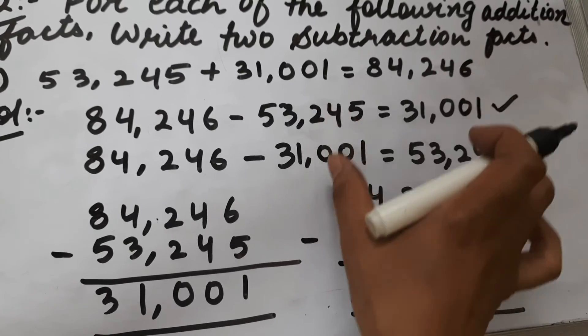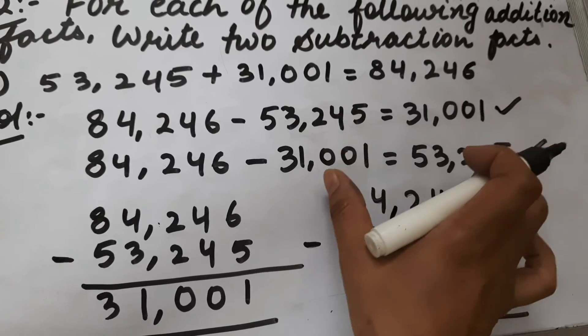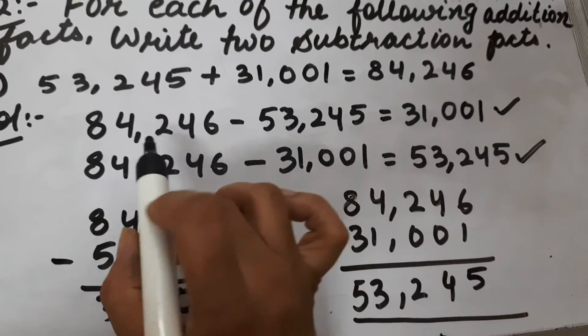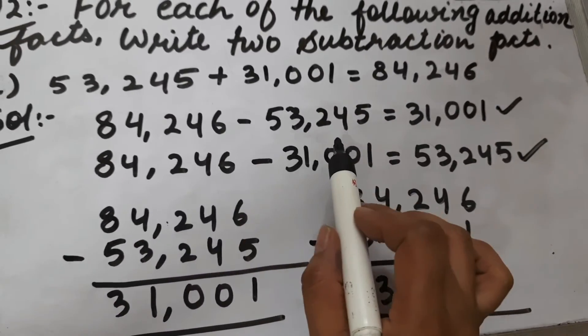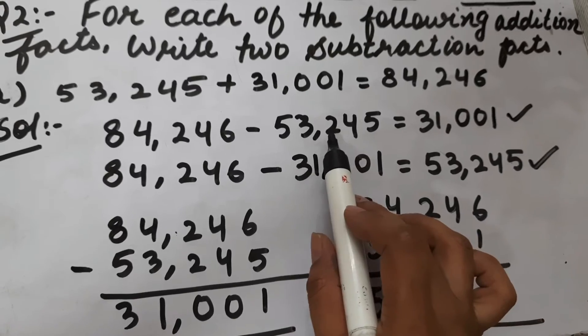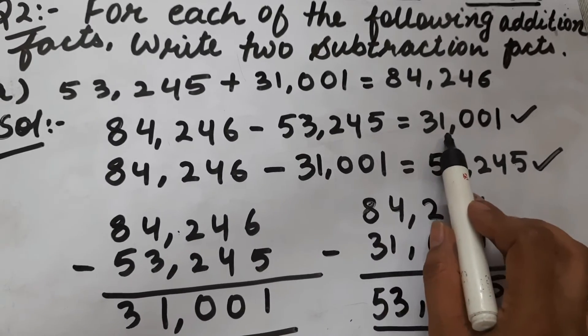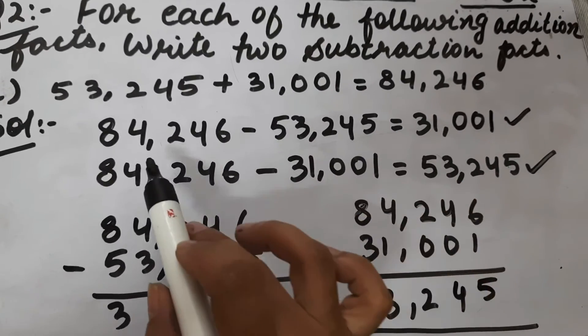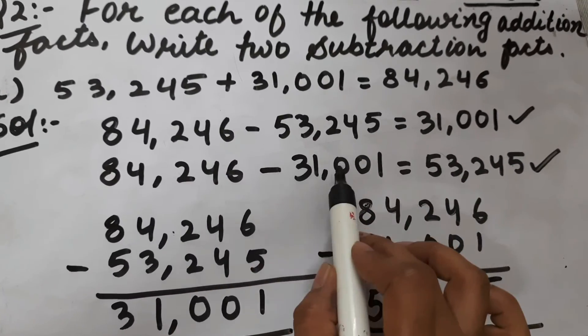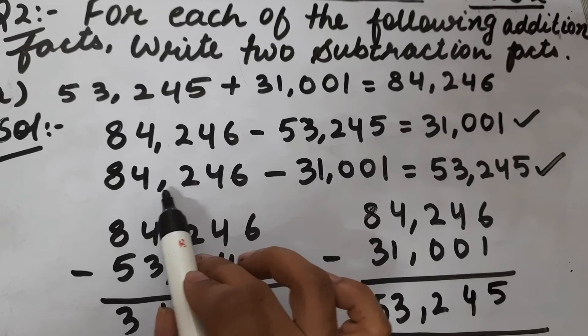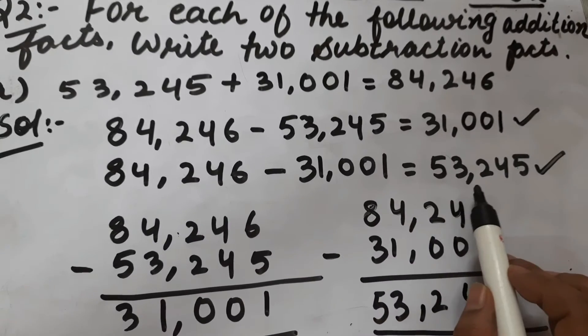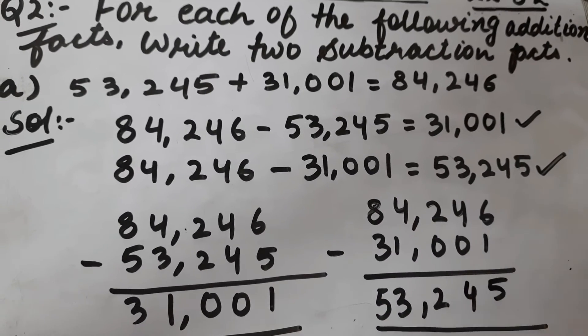So these two are the subtraction facts: first, if we subtract the first addend from the total, we get the second addend; and second, if we subtract the second addend from the total, we get the first addend.